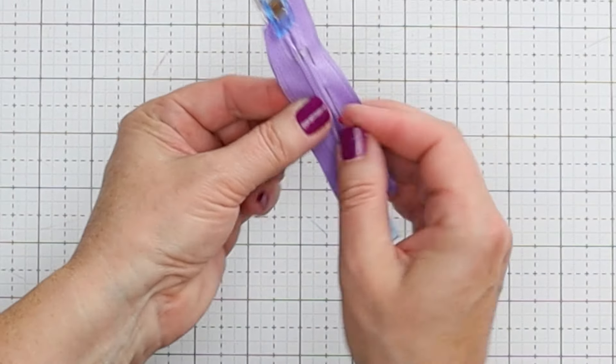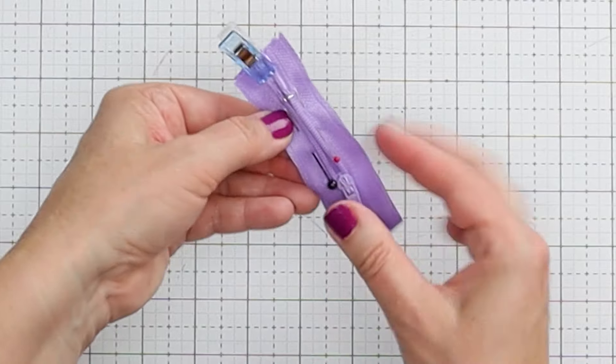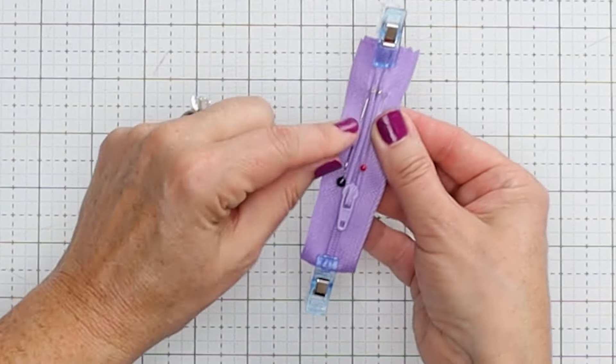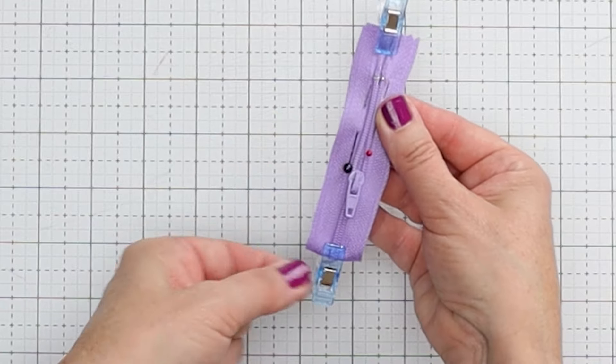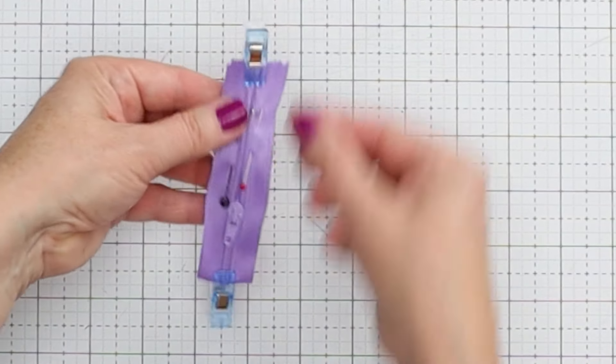I'm going to do that for the other side as well. And I do want the ball of the pin, the head of the pin down towards the folded side. So if I need to take it out while I'm sewing, I can grab it like that. Now we are going to just take this to the sewing machine and stitch both sides.